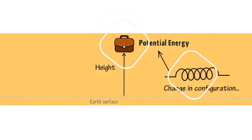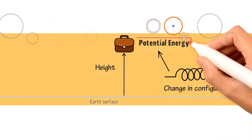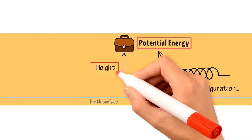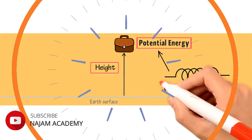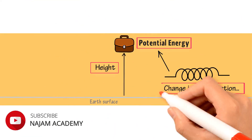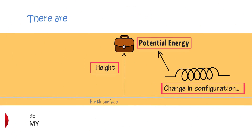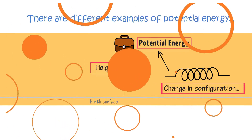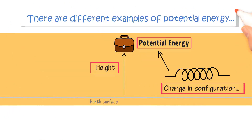In these two examples of Potential Energy, we got that if an object possesses Potential Energy, it would be due to a particular height or change in configuration. There are different examples of Potential Energy, and I will explain each and every form or example of Potential Energy.